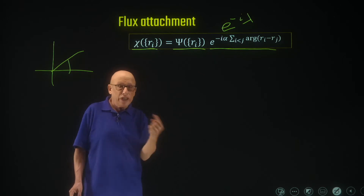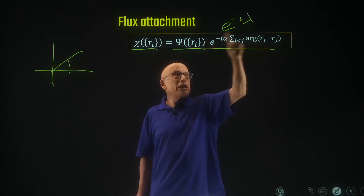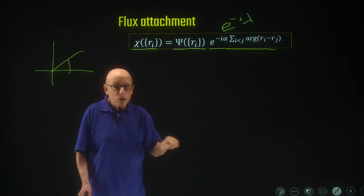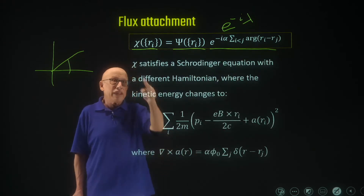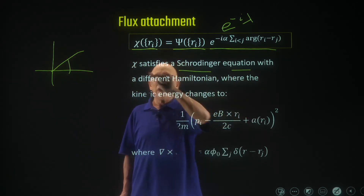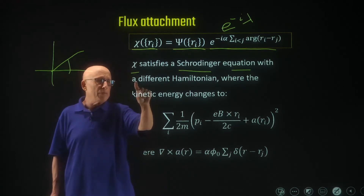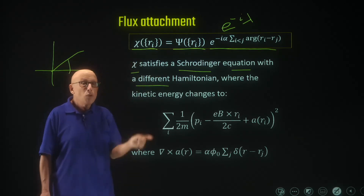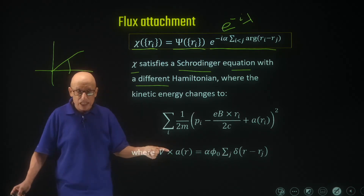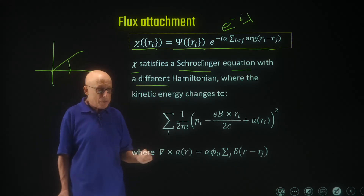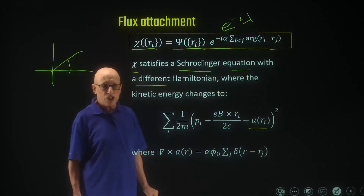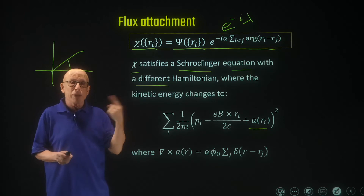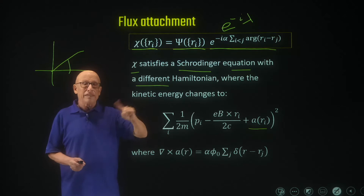Multiplying a function by a phase factor is a gauge transformation, and a gauge transformation introduces a vector potential. So chi satisfies a Schrödinger equation but with a different Hamiltonian — the difference being only the introduction of a new vector potential. A gauge transformation usually introduces a vector potential whose curl is zero, but this is a special, singular gauge transformation.